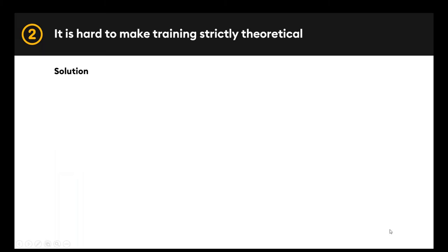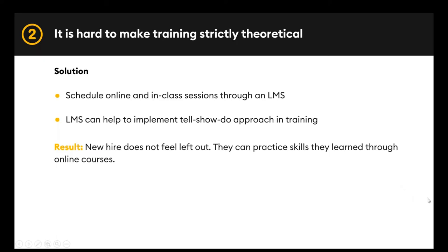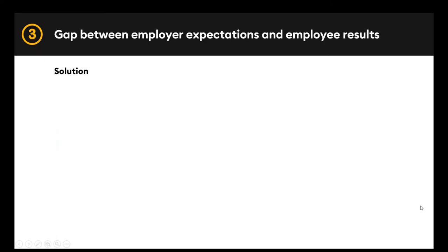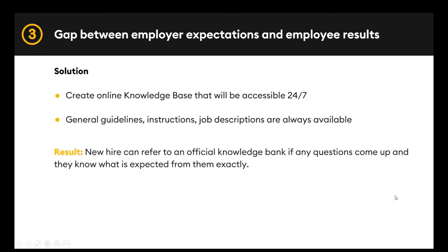The second challenge was that it's hard to make training strictly theoretical, and a blended approach is required. It is super easy to accomplish this through e-learning. They can schedule online and classroom sessions through the LMS. Learners will first read about the process, watch a tutorial, go for a self-check, and only when they have a solid knowledge base will they start performing the task in real life with a supervisor. The next challenge was the gap between employer expectations and employee performance, which increased training time and led to poor results. General guidelines and instructions can be stored in a knowledge base that employees can access 24/7.